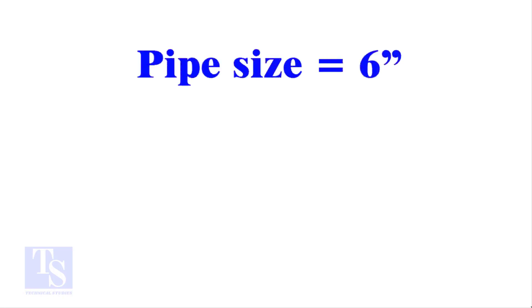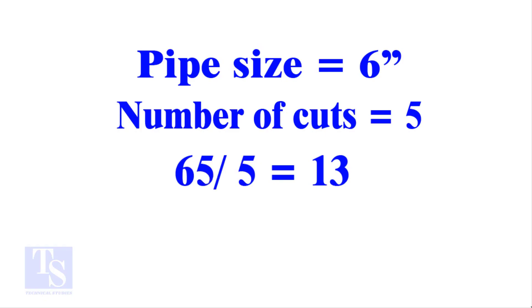Pipe size 6 inches, number of cuts 5, and the answer is 13. Calculate the cutback in any method and compare it with this answer. Surprised?